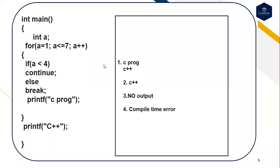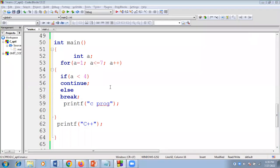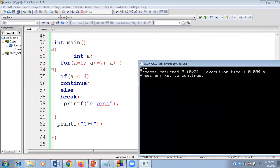This is the fourth question. In main, int a — for loop: a equal to 1, a less than or equal to 7, a plus plus. If the value of a is less than 4, use the continue keyword; else, break. Then print 'C program' inside the loop, and outside the for loop, print 'C++'. The options are: C program followed by C++, just C++, no output, or compile time error. If I execute this code, the final output is C++ gets printed on the screen.